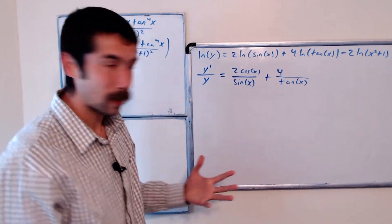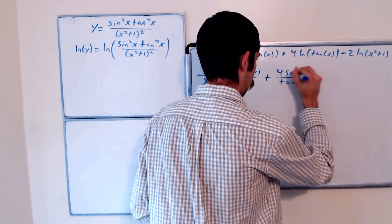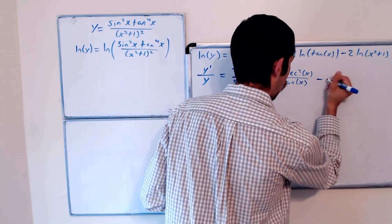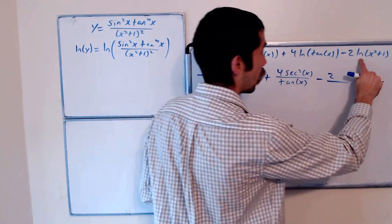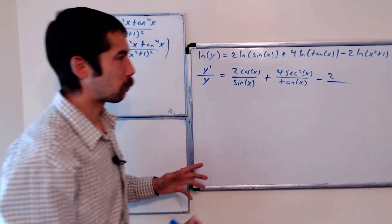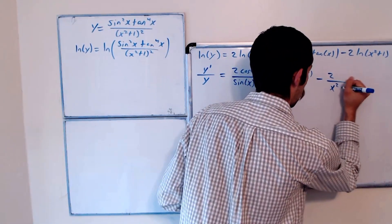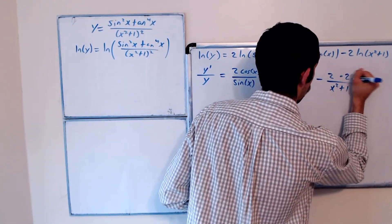Minus 2. What's the derivative of the natural log of x squared plus 1? It's 1 over x squared plus 1 times the derivative of the inside, which is 2x.